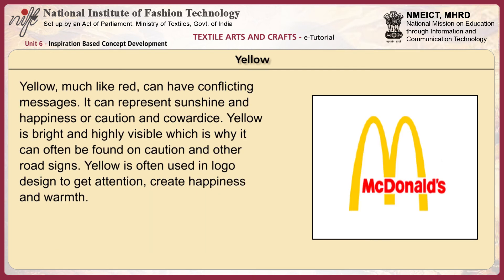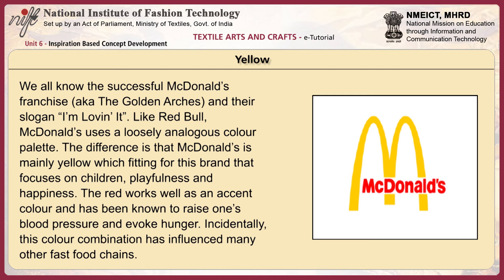Yellow, much like red, can have conflicting messages — representing sunshine and happiness or caution and cowardice. It is bright and highly visible, which is why it can often be found on caution and road signs. Yellow is also used in logo design to get attention, create happiness and warmth. McDonald's uses a loosely analogous color palette — mainly yellow, which is fitting for a brand focusing on children, playfulness and happiness, while red works as an accent color known to raise blood pressure and evoke hunger. This color combination has influenced many other fast food chains.